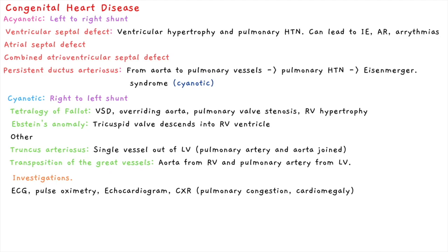Investigations include ECG looking for any arrhythmias or signs of ventricular hypertrophy, pulse oximetry to assess oxygen saturation, echocardiogram to visualize any structural abnormalities, as well as chest X-ray to detect secondary pulmonary congestion and broadly visualize cardiomegaly.